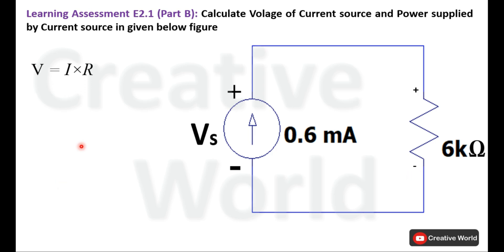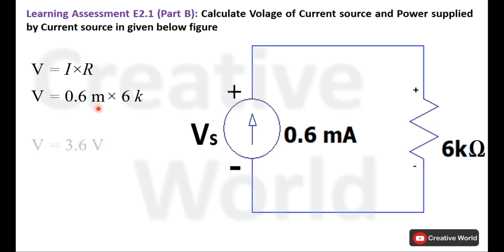The basic equation of Ohm's Law is V equal to I multiplied by R. We know the values of current and resistance, so we place the values into the equation and calculate the voltage, which is 3.6 volts. This voltage across the resistance is also appearing across the constant current source because of the parallel connection, so the value of Vs will also be 3.6 volts.